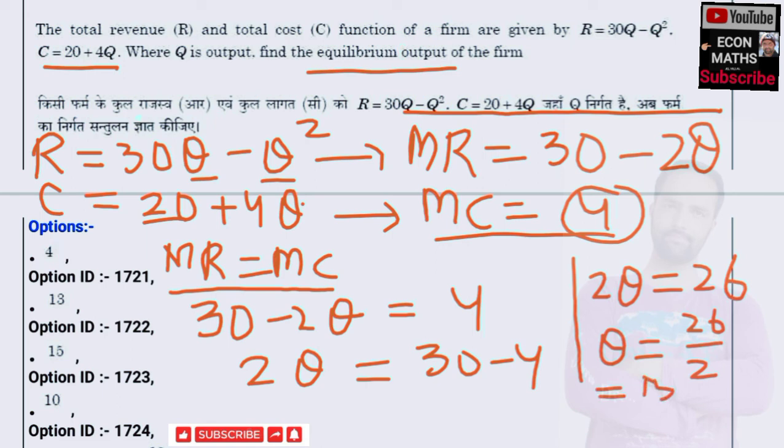So the correct option is 13. The equilibrium output is 13. I hope I made myself clear, thank you.